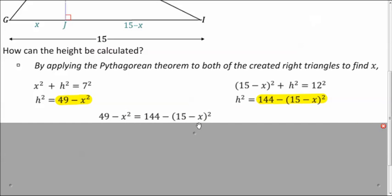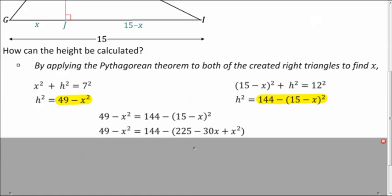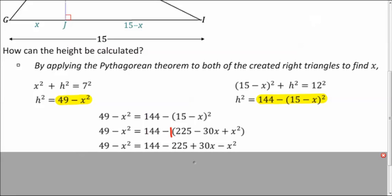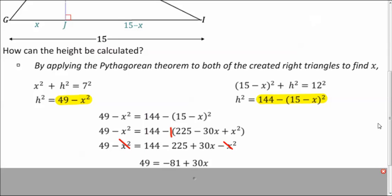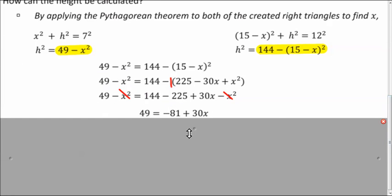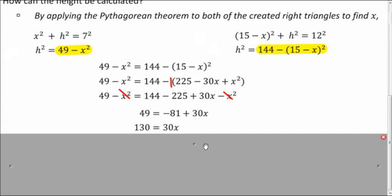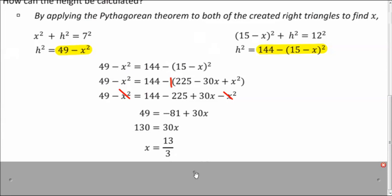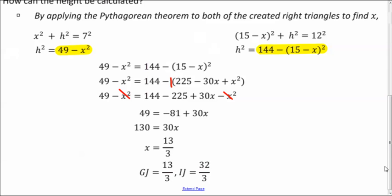And we can square this binomial right here. And we can distribute that negative in front of the parentheses. So it's going to flip all the signs. And we can solve this. The bottom is when we add x squared to both sides. Those cancel out. So to simplify, combining like terms here, we get this equation. So add 81 to both sides. Divide by 30. And we get 13 thirds for x. So that must mean that the longer one is 32 thirds. Subtract that from 15.